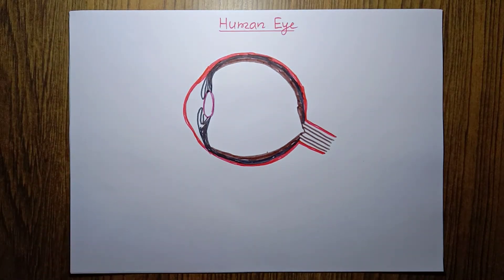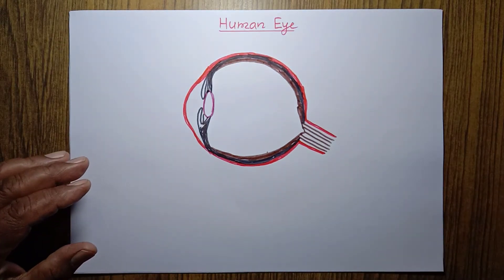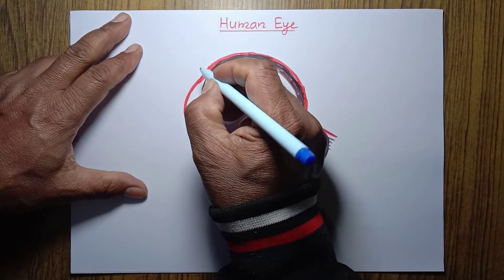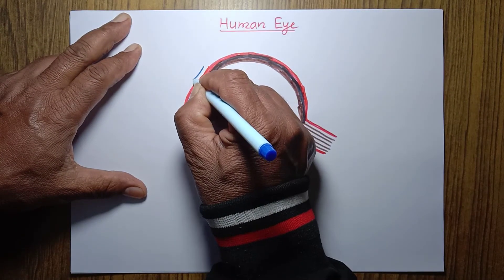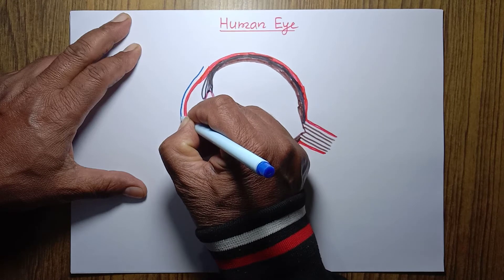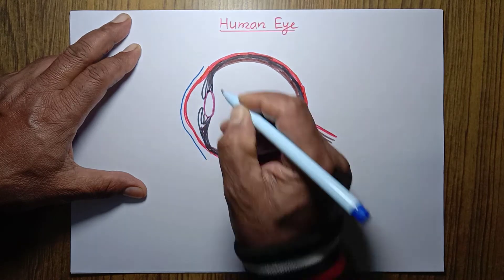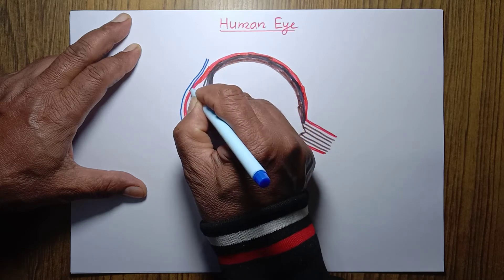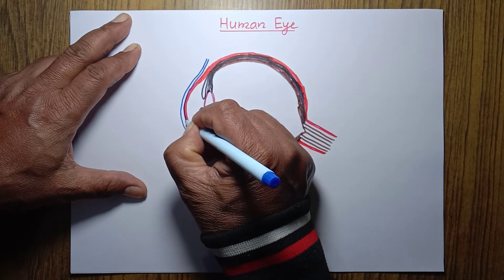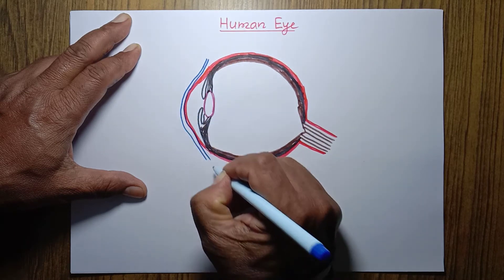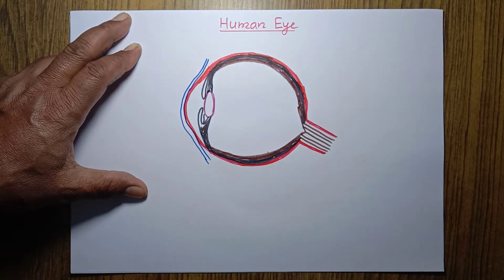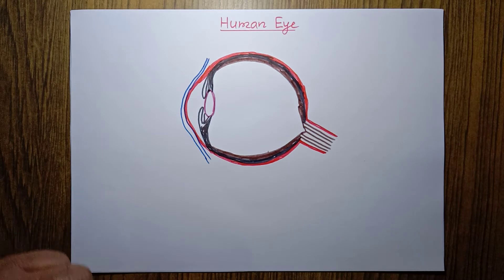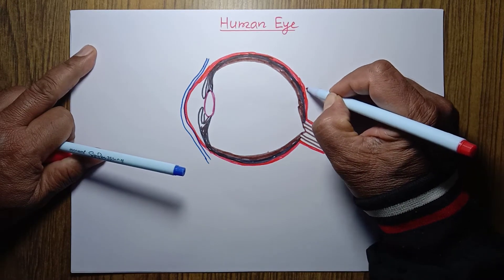I want to make one more part just in the front side of the eyeball. This is a very thin membrane called conjunctiva. This is the representation of the eye.